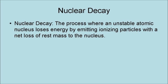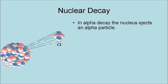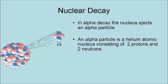Nuclear decay is the process where an unstable atomic nucleus loses energy by emitting ionizing particles with a net loss of rest mass to the nucleus. While there are many types of nuclear decay, there are two main ones found in nature: alpha decay and negative beta decay. In alpha decay, the nucleus ejects an alpha particle. An alpha particle is a helium atomic nucleus consisting of two protons and two neutrons.